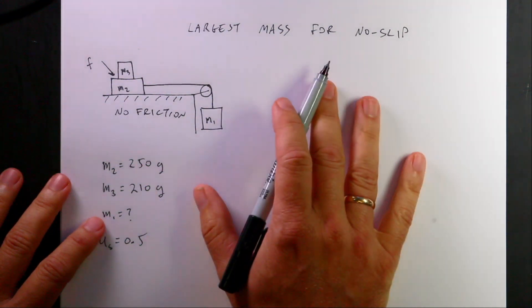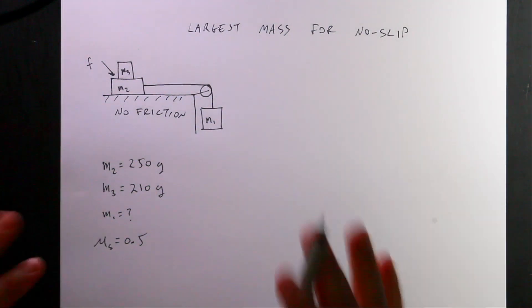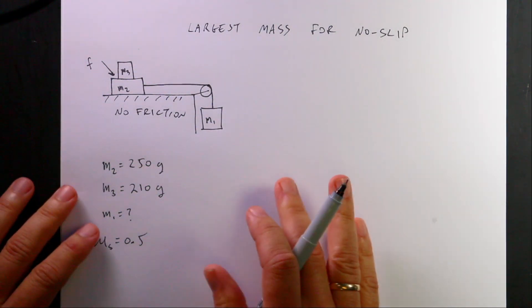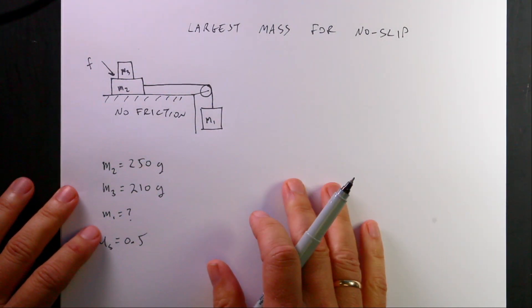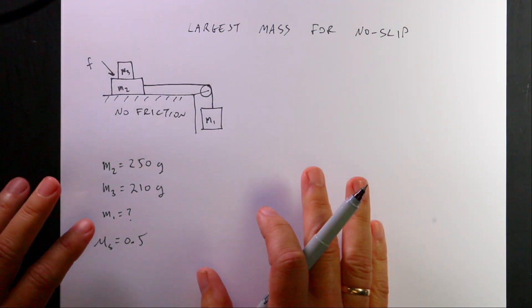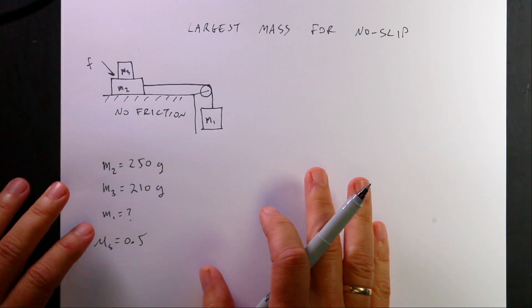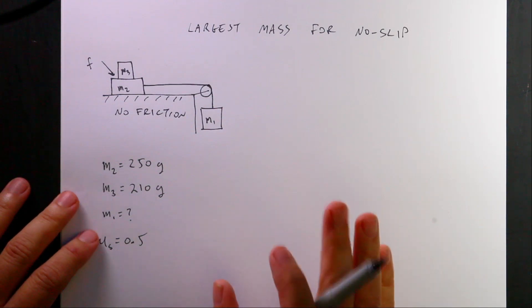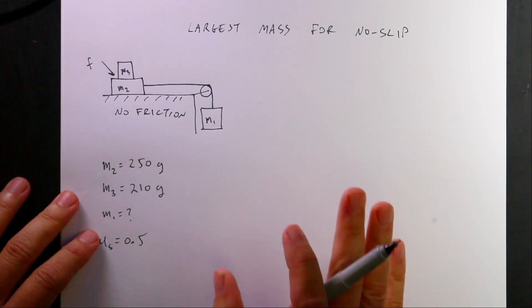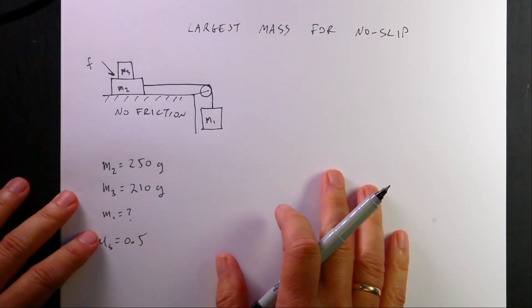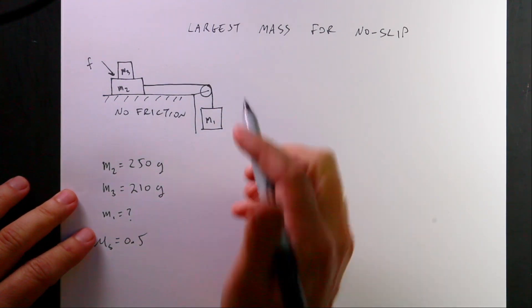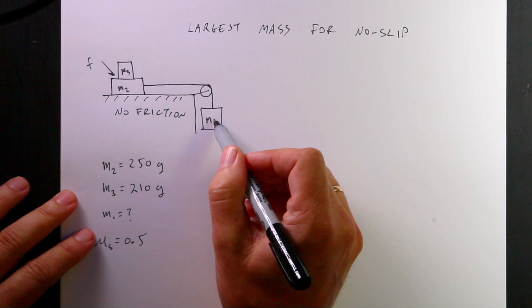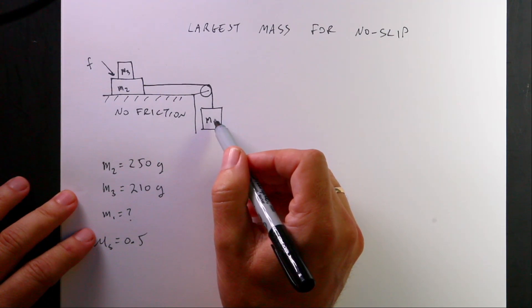You may be tempted to use the standard equation for a half Atwood machine, and you probably could get by that way. But I'm going to do this the best way, which is to start by looking at the forces on each mass individually.